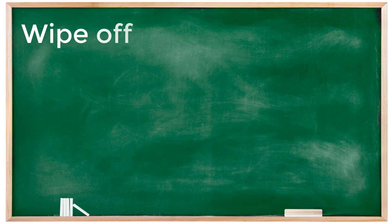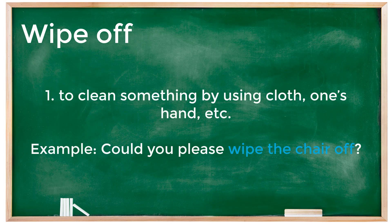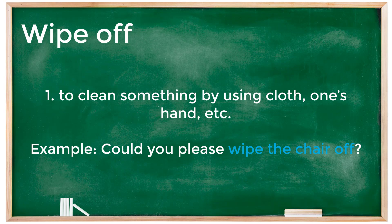Let's start with our first phrasal verb: wipe off. Like most phrasal verbs, it has more than one meaning. The first meaning is to clean something by using a cloth, one's hand, etc. For example, if the chair is dirty and you want someone to clean it, you would say: 'Could you please wipe the chair off?' — meaning, could you please clean the chair.